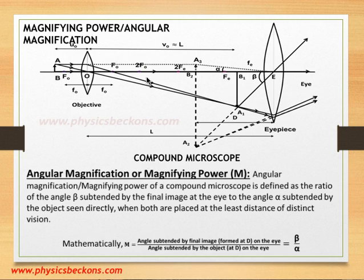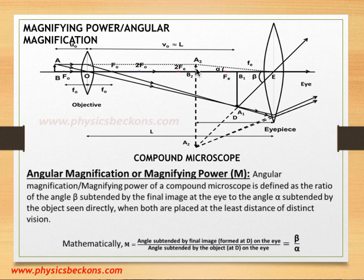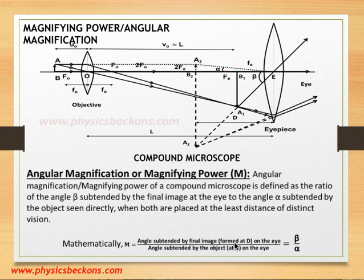The magnifying power or angular magnification, denoted by capital M, is the ratio of the angle beta subtended by the final image on the eye to the angle alpha subtended by the object on the eye, when both the image and the object are placed at the distance of distinct vision. So when we shift AB to this position, M is the angle subtended by the final image on the eye to the angle subtended by the object at D on the eye. The angles are beta and alpha.